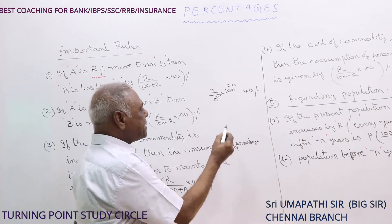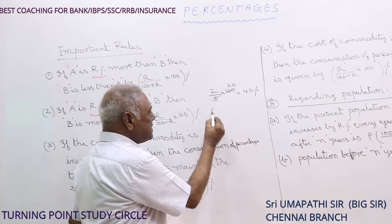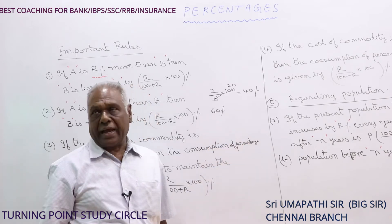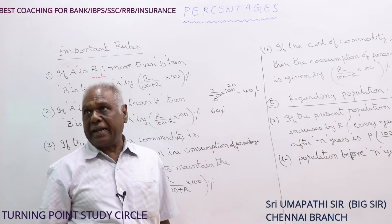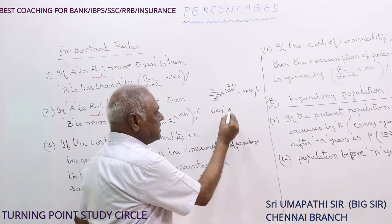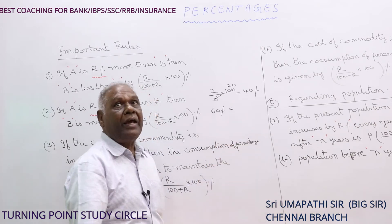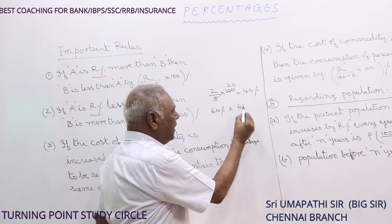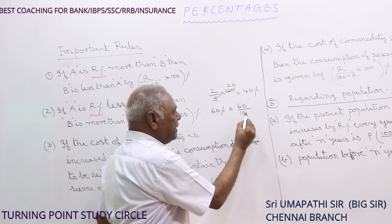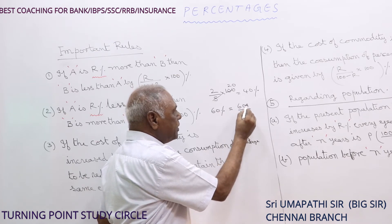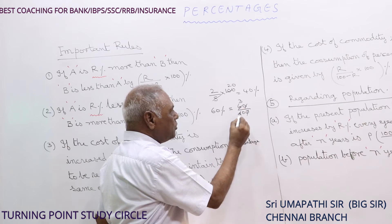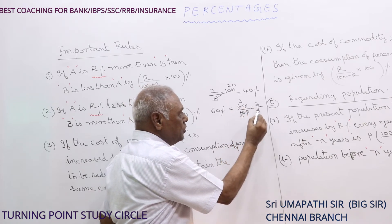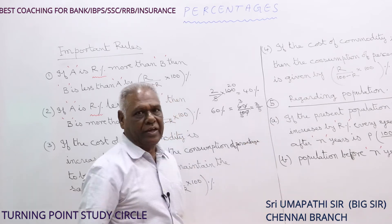Suppose 60% is given and it is required to convert it into a fraction, then the given percentage, that is 60, must be divided by 100. So 60 divided by 100 — the zeros cancel to give 3/5. Hence, 60% is equal to the fraction 3/5.